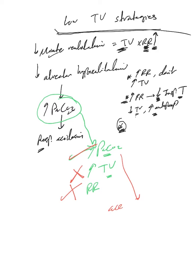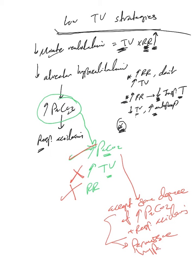Accept some degree of increased PaCO2 and respiratory acidosis. This is what we call permissive hypercapnia.